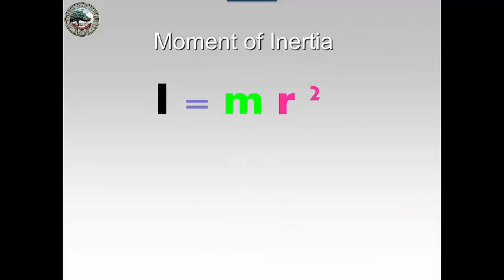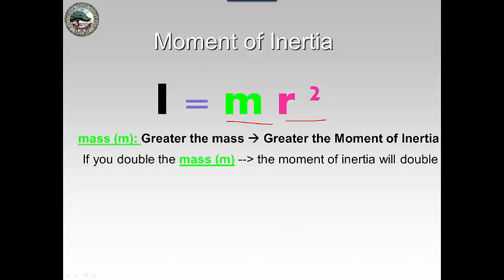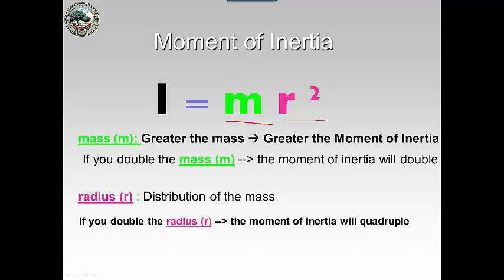Let's look at the moment of inertia concept. As we learned before, moment of inertia is the mass times the distribution of that mass to the square power. If you have greater mass, you have greater moment of inertia — double the mass, you double the moment of inertia. But for the radius, or distribution of mass, if you double the radius, the moment of inertia will quadruple. Conversely, if you decrease the radius, you decrease the moment of inertia.